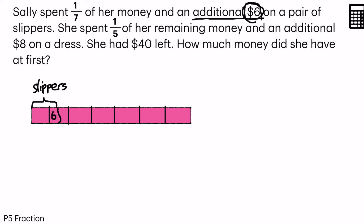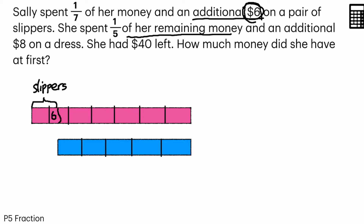Next part, she spent 1/5 of her remaining money. So I'm going to draw a drop-down box because there are no 5 units here — there are 1, 2, 3, 4, 5 and something else. In this drop-down box there are a total of 5 units, inclusive of this little portion here. She spent 1/5 and an additional amount again, so I'm going to cut it. This part is equal to $8, because this $8 does not make up to become 1 unit. So this portion is spent on a dress.